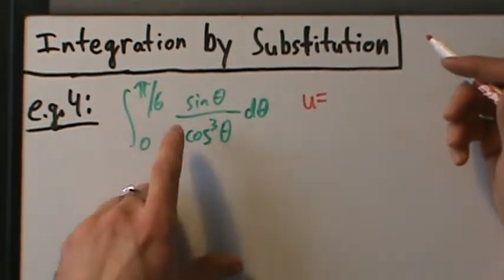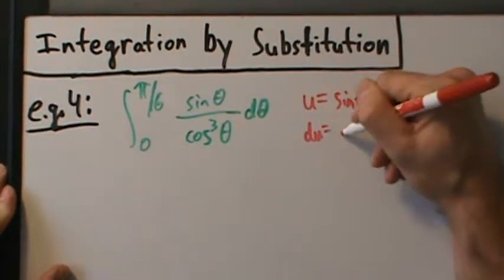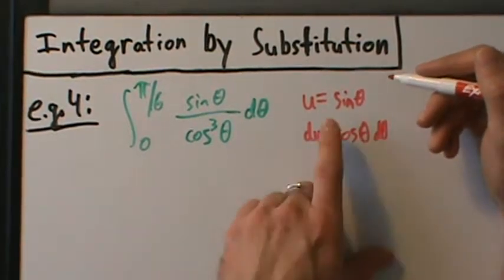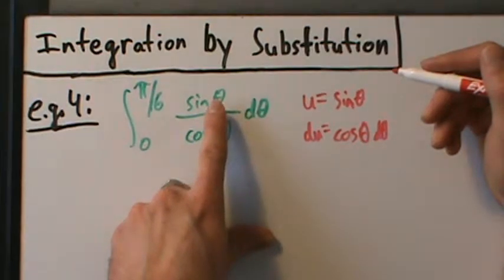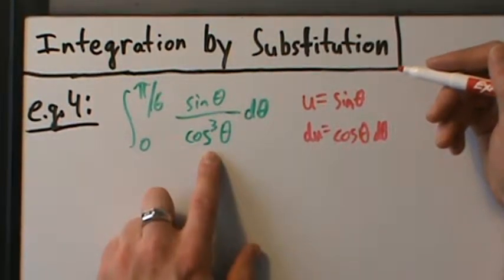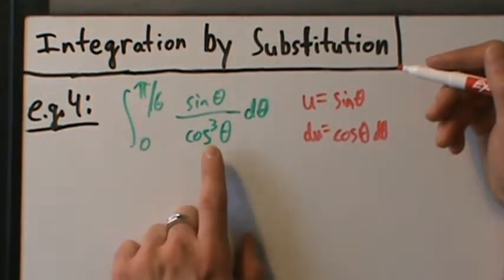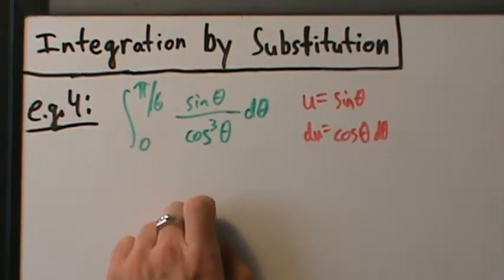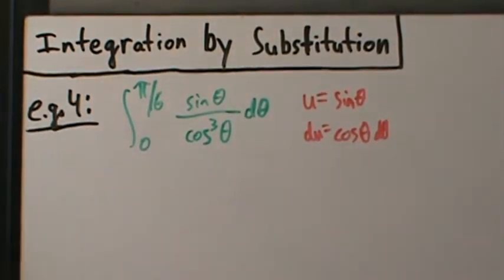Did we see that? Well, if we let u be sine of theta — that's not right, but I want to show you why — then du is going to be cosine of theta d theta. So that takes care of the sine of theta on top, and we can handle the limits pretty easily. But we still have this d theta with no cosine attached the way we want. We have cosines on the bottom, and if we let u be sine of theta, handling those on the bottom is really not going to work out.